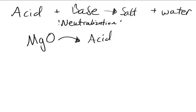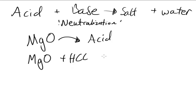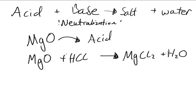Let's say we reacted MgO with HCl. We would produce MgCl₂ and H₂O. To balance this: there are two hydrogens on the left so we put a 2 in front of HCl, which also closes the Cl balance. Now it's balanced.